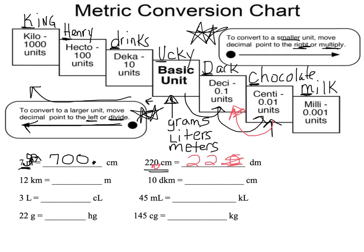If we try another one — here we are at 12 kilometers. So now I'm here at kilo, and I need to go to meters. So I'm going to go one spot, two spots, three spots. I'm moving to the right, which is multiplying it, making the number larger, and I'm doing it three spots. Here's my imaginary decimal point — I'm going to put some imaginary zeros here and move it one, two, three spots, which means that I have 12,000 meters.